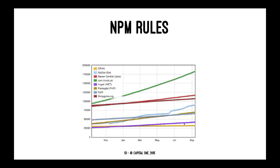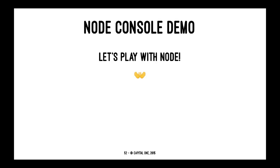Why does NPM rule? It has a lot of modules. The orange line shows the number of modules in Maven Central (Java), and the red line shows RubyGems. The number of modules in NPM is roughly twice the number of RubyGems and Maven Central modules combined. The next demo is the Node Console.